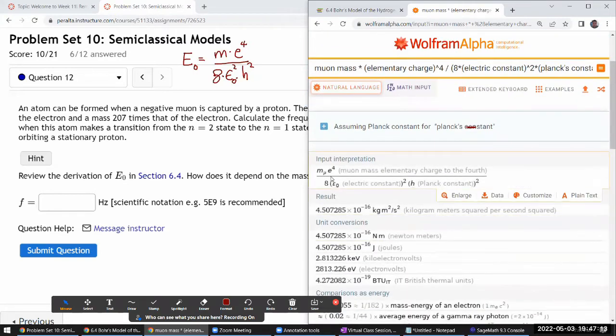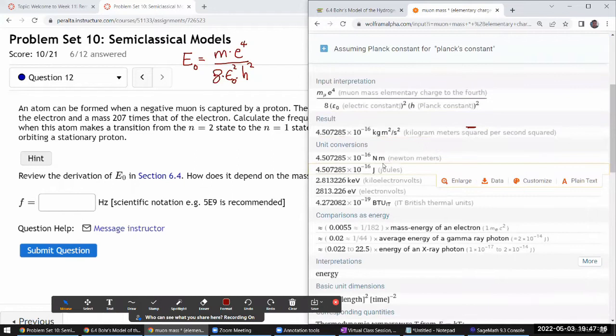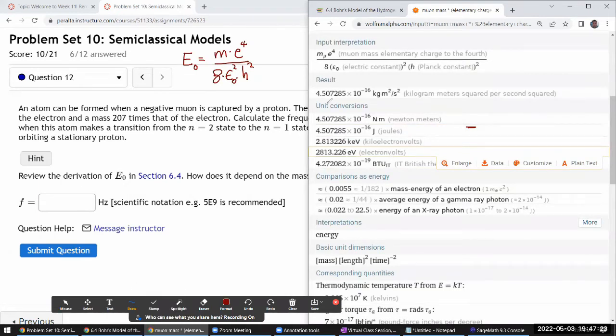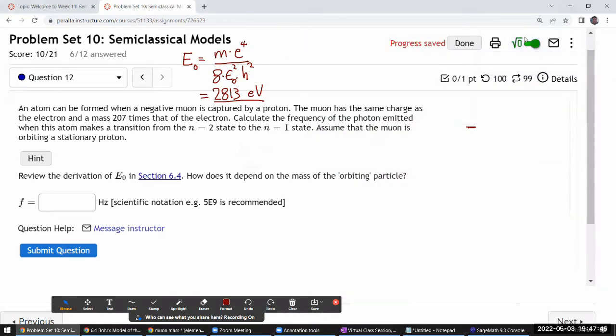Then all these expressions are valid. And the only thing that changes is that baseline energy—what used to be 13.6 eV is now this kind of crazy large number: 2,813 eV. Pretty large. I guess that's 207 times what it was before, because in this expression it's proportional to the mass.